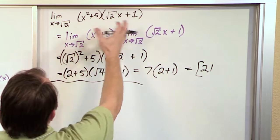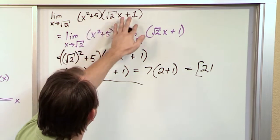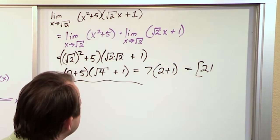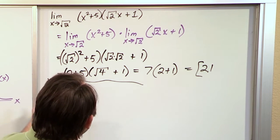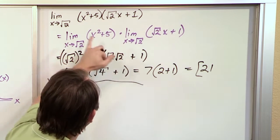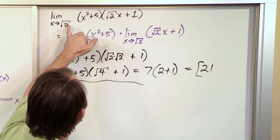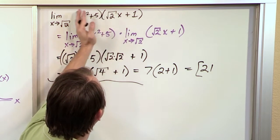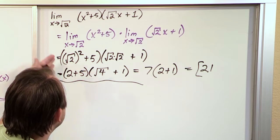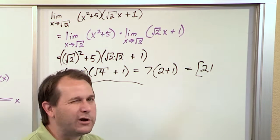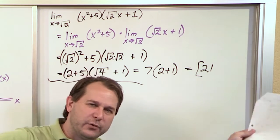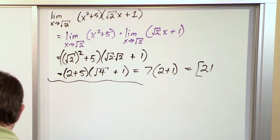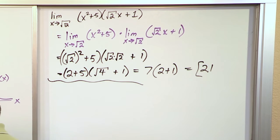Basically, it's just an example showing you that if you have two functions multiplied, no matter what they look like, you can apply the limit separately. But in practice, you don't really have to write it all out like this because it's the same thing as just plugging it in. If I plug this in here and plug this in here, you're going to end up multiplying the results anyway. As long as you know what's legal and what's not.